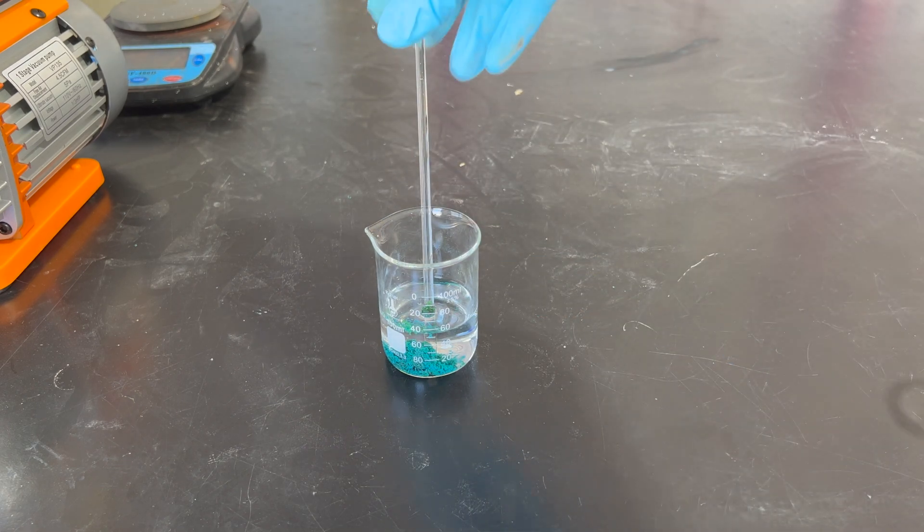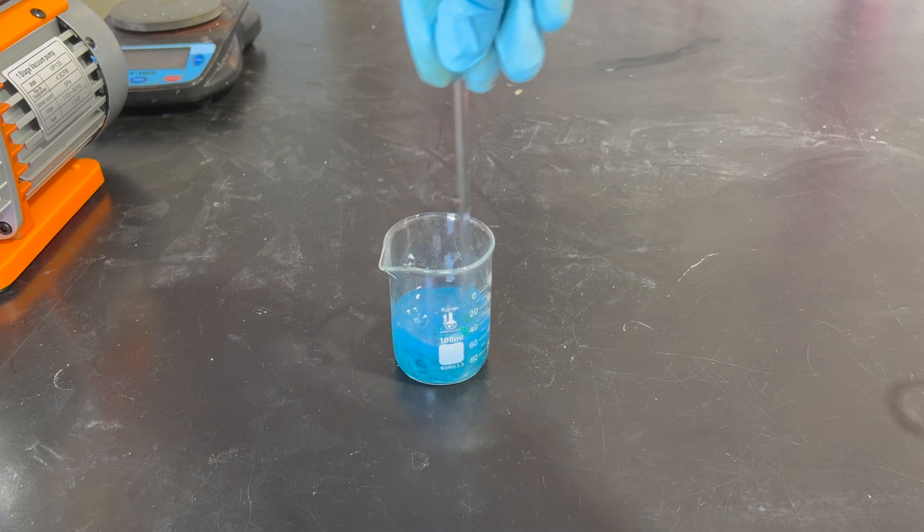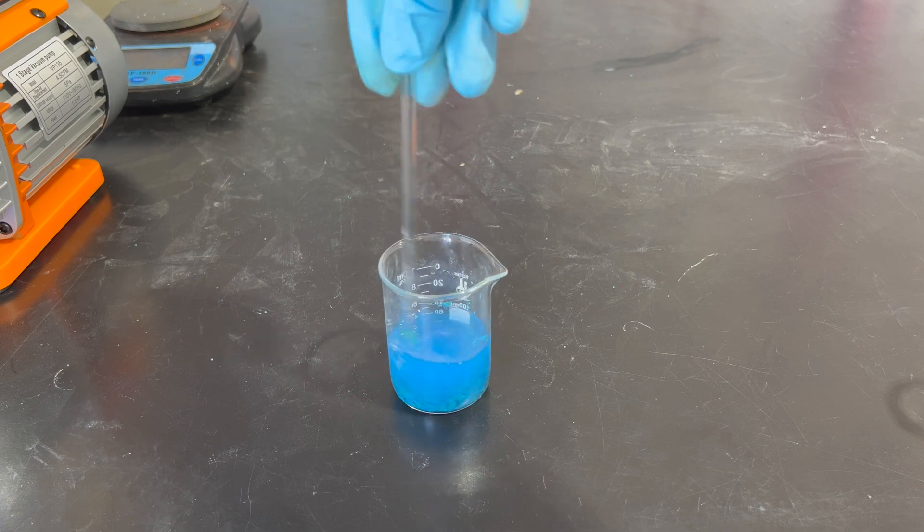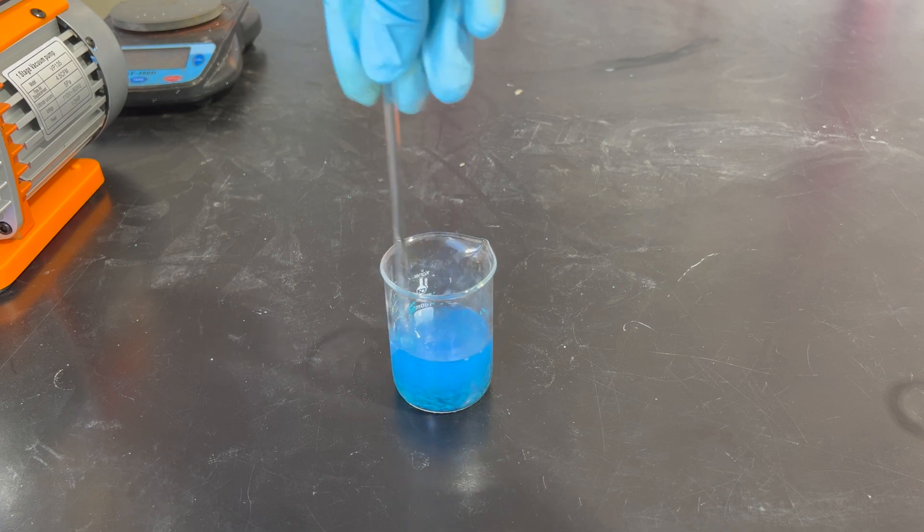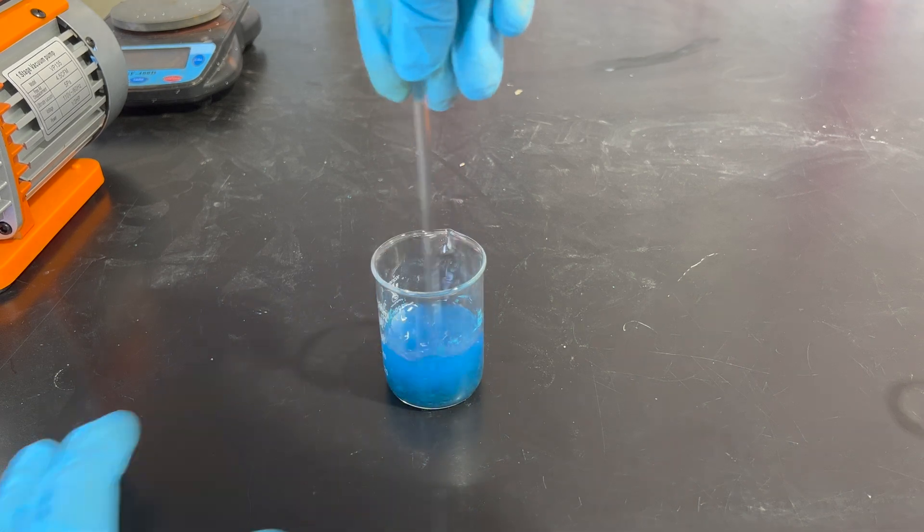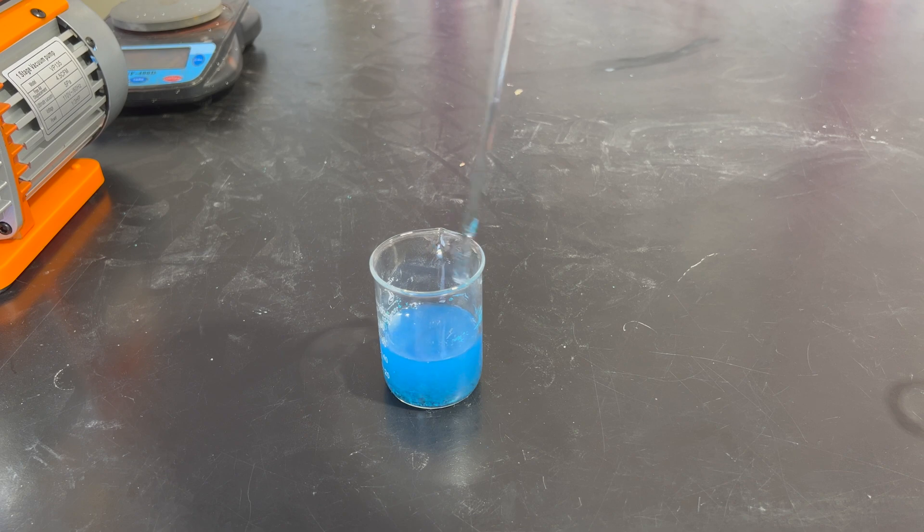We'll be using a vacuum filter for this. We'll start the solution around to make sure that all the copper 2 chloride reacts, and also it creates a really pretty blue solution. This is the color of the copper hydroxide, which, as you can see, is very beautiful. Now that we're done stirring it for a bit, we'll move on to the filtration.